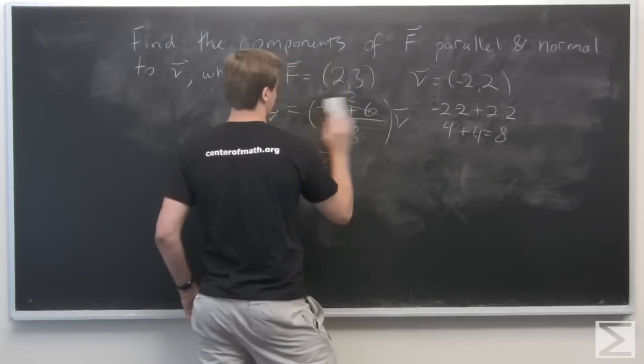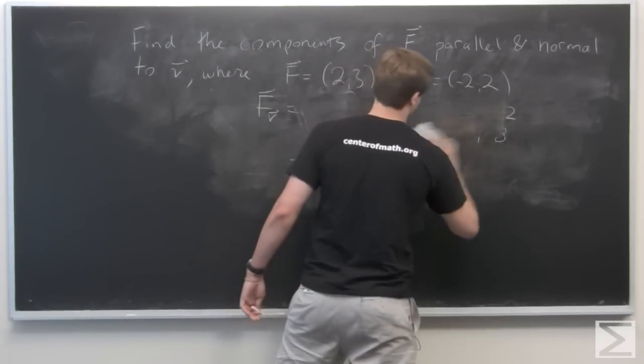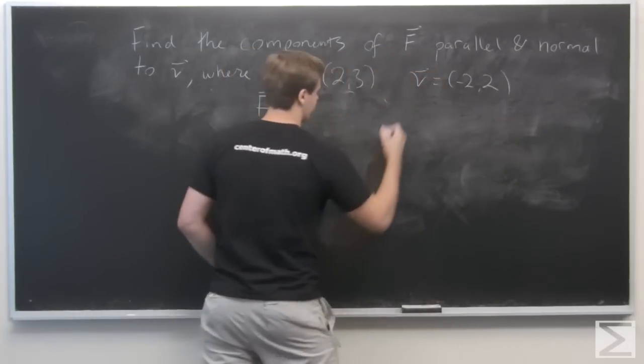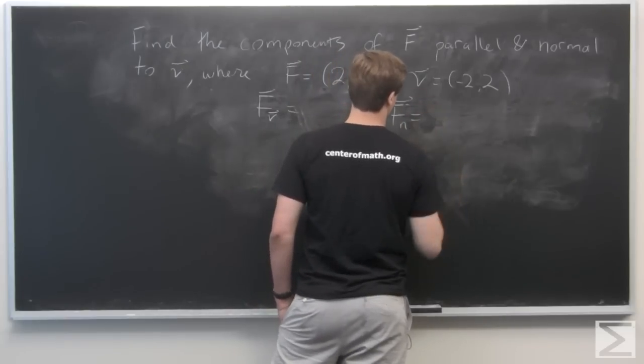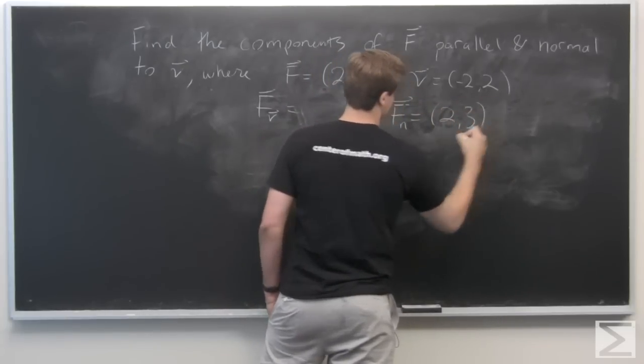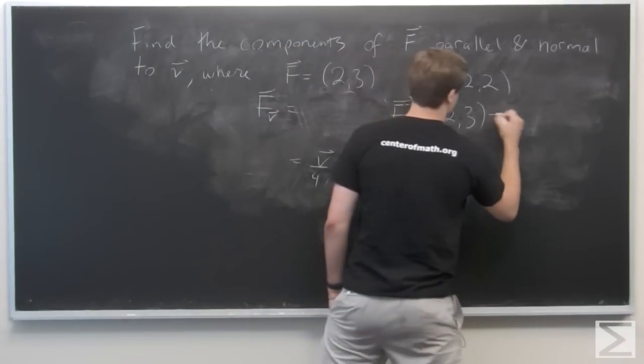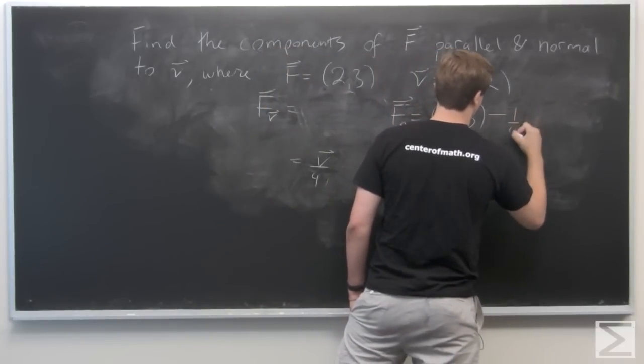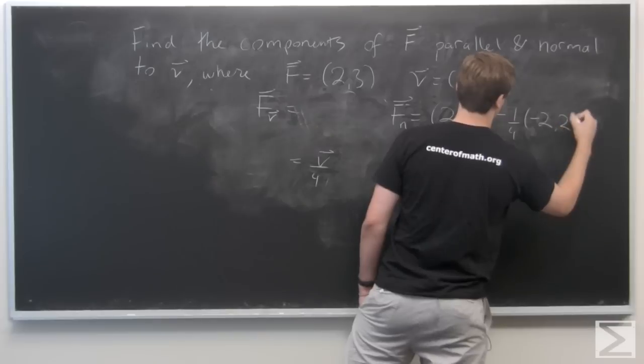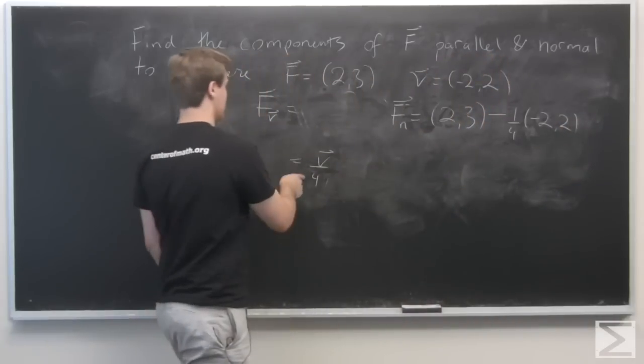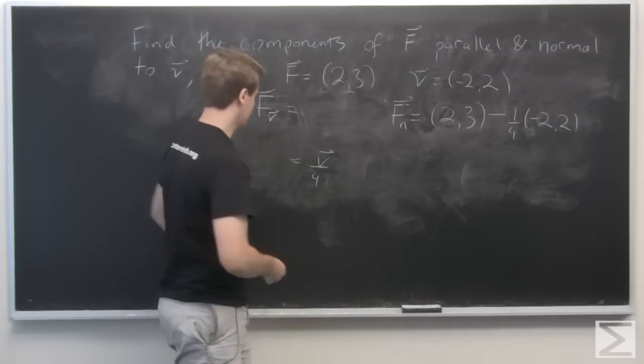So we take the initial vector (2, 3) and subtract 1/4 times (-2, 2), where this is just going to be f_v. You should probably write that up there.